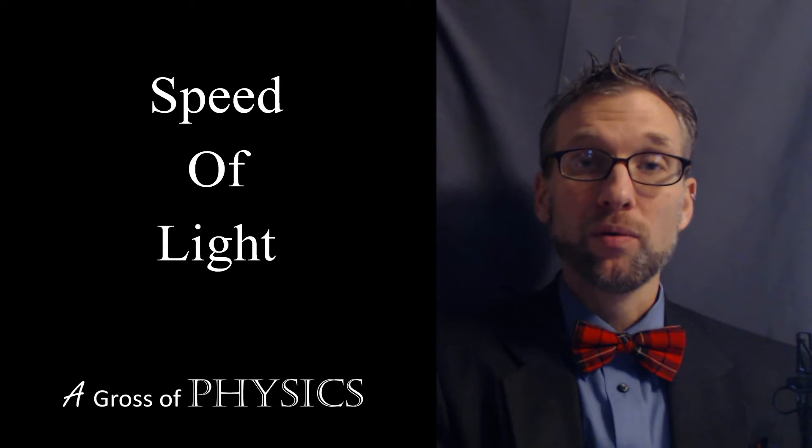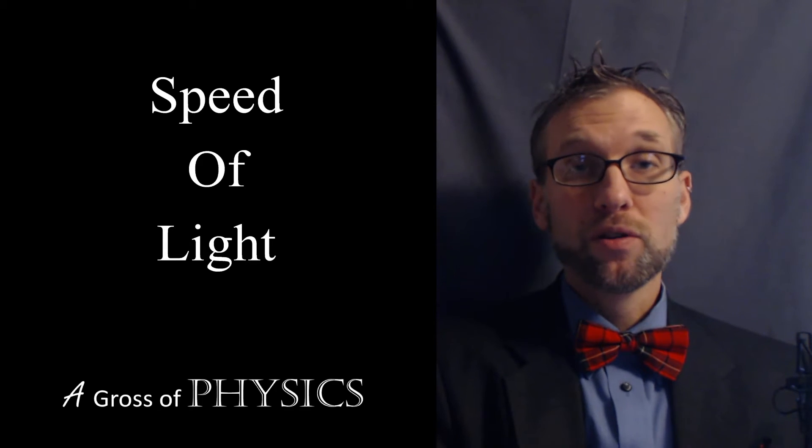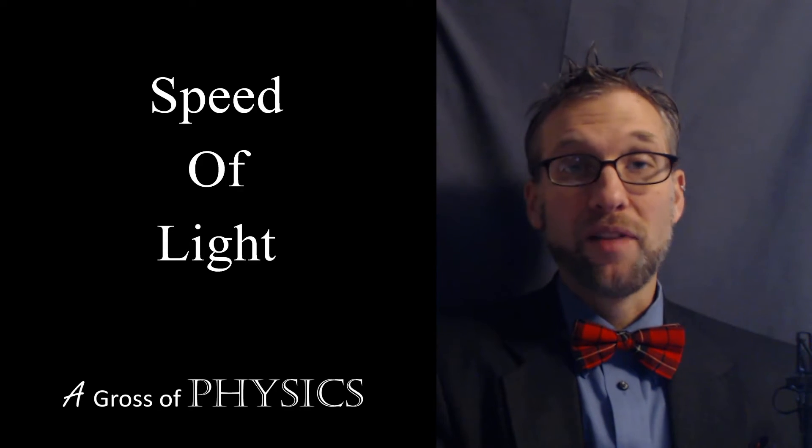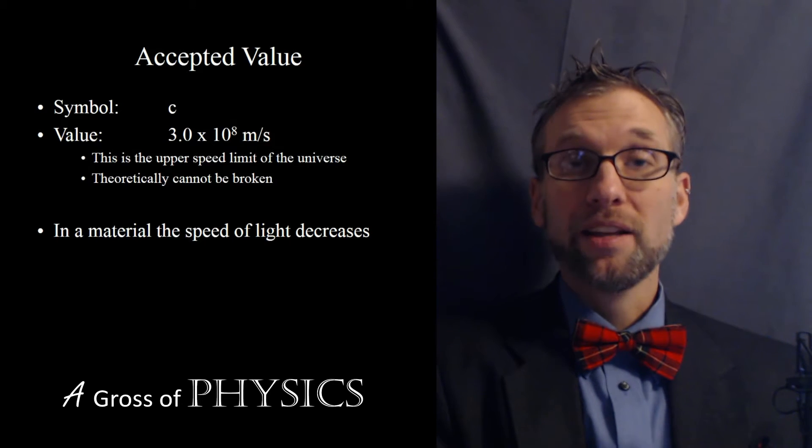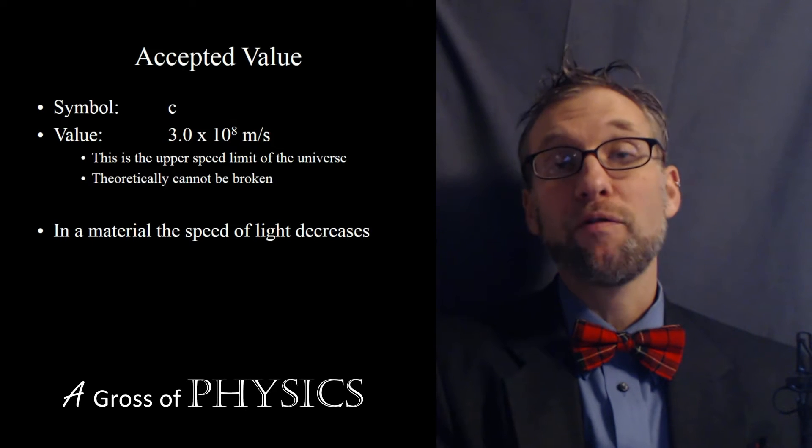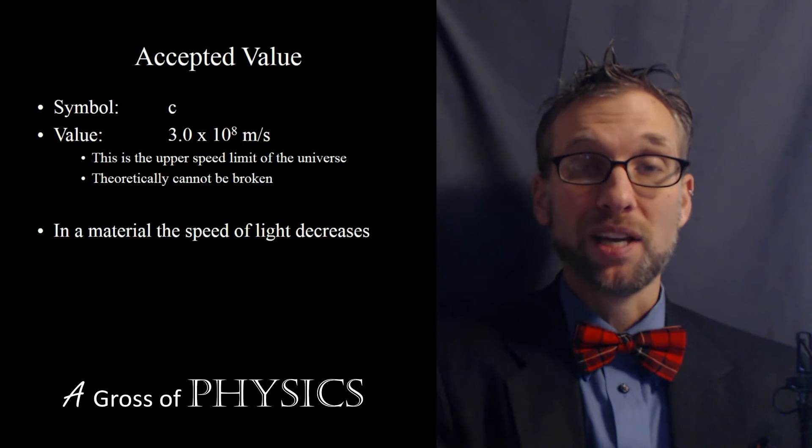But for now, I'd like to start with the basics of light. First things first, light has a value that we know definitively today, and that's 3 times 10 to the 8 meters per second, and that's how fast light travels through the vacuum of space.